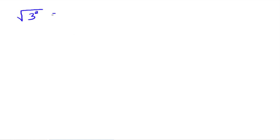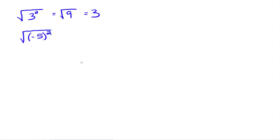The square root of 3 squared: one way to look at that is the square root of 9, which goes to 3. You might say you've got the square root and a square, so they cancel leaving 3. The dilemma comes with the square root of negative 5 squared — this doesn't just go to negative 5. The square root does not undo the square leaving negative 5, because we're talking about the principal square root. It needs to equal positive 5. So: negative 5 squared is 25, and the square root of 25 is 5.